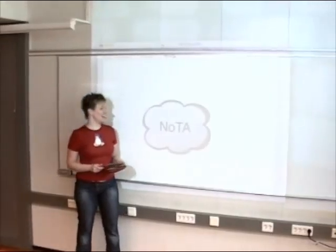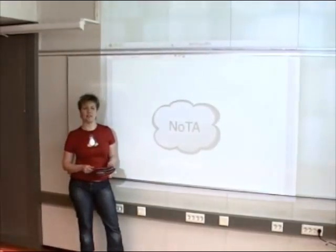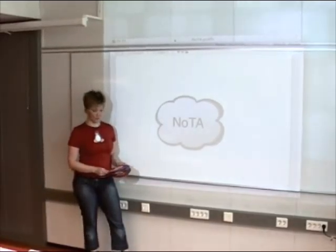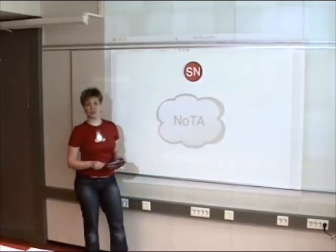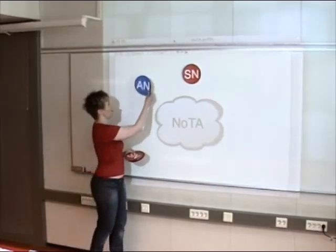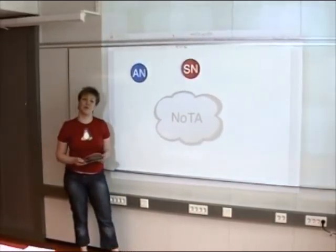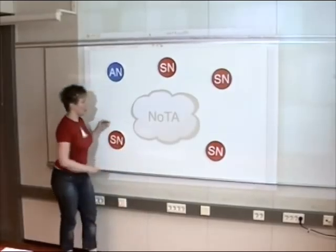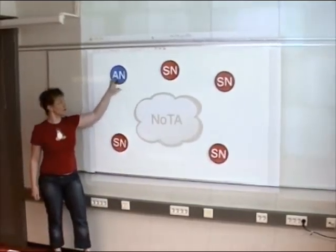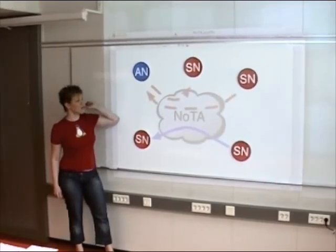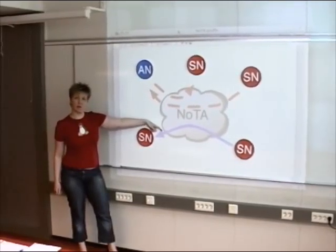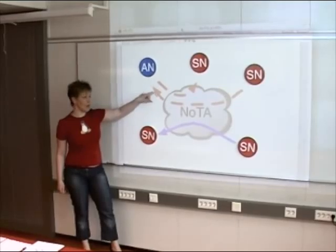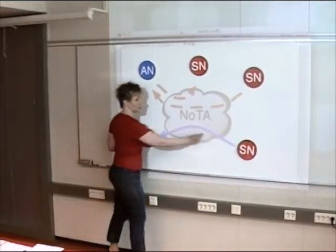Okay, here we are. Network on Terminal Architecture is a service-based architecture for mobile and embedded devices. In NOTA applications we have two types of nodes: first of all, service nodes — a service node could be a camera, for example — and application nodes, which are something visible to the user. In the application there can be any number of nodes. So NOTA is the communication platform that the nodes use. We have two different types of communication: we can have a data stream, which could be audio or video, and communication messages. Now we're going to take a closer look at the communication between two nodes.